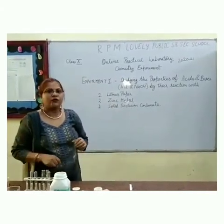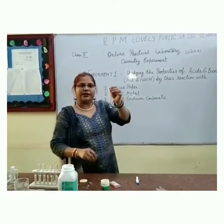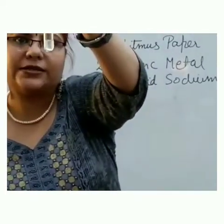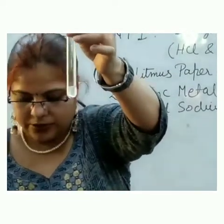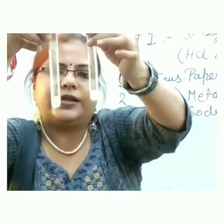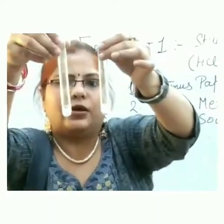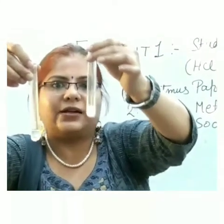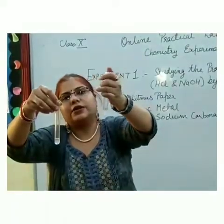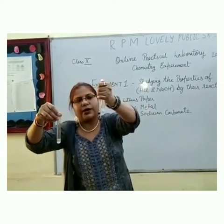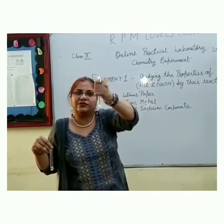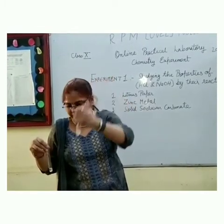Now we will see the effect of zinc metal in acid and base. We have taken acid and we will add zinc metal in this. You can see that small bubbles of hydrogen gas are coming very vigorously. But if we add zinc metal in the base, there is no such gas produced. So we can see that acids react with metals to liberate hydrogen gas. We can test this hydrogen gas — if we bring a burning matchstick near the mouth of the test tube, it will burn with a pop sound. This confirms that the gas is hydrogen gas.